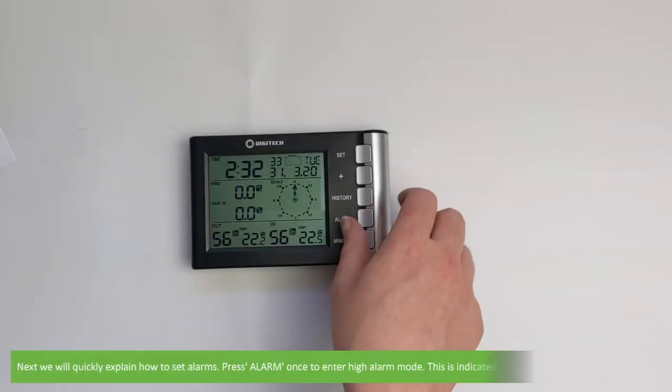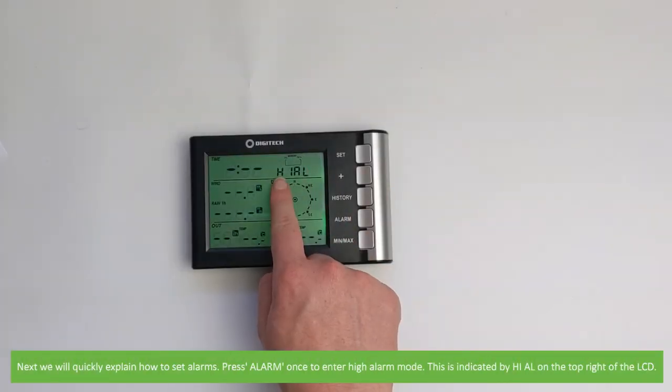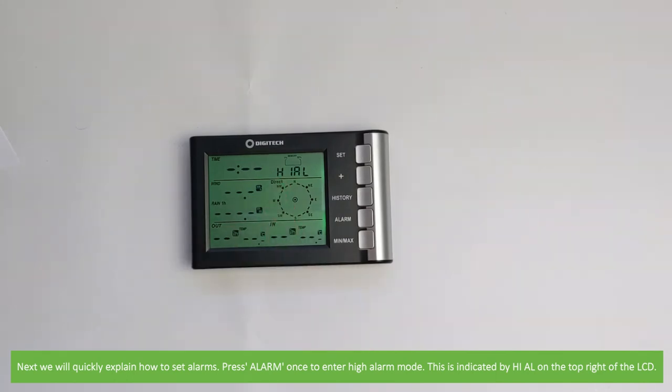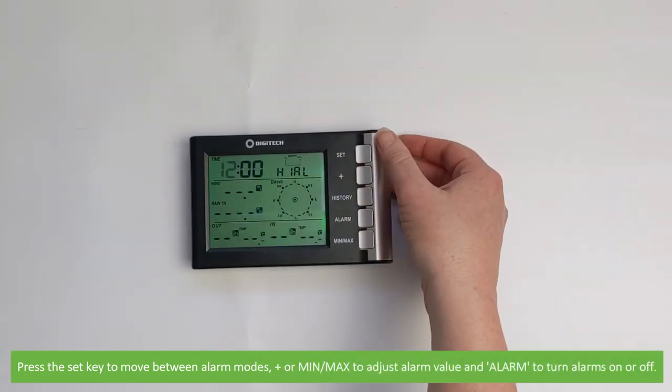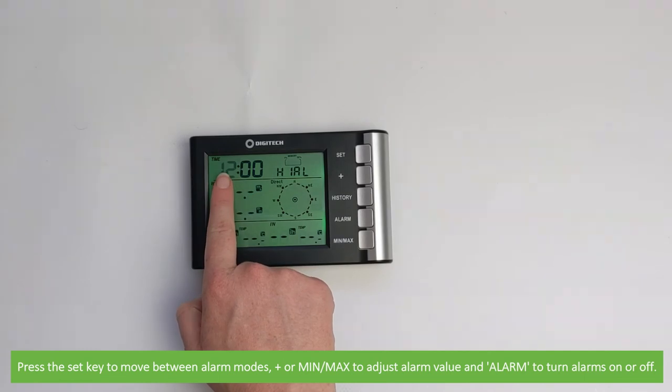Next we will quickly explain how to set alarms. Press alarm once to enter high alarm mode. This is indicated by H-I-A-L on the top right of the LCD. Press the set key to move between alarm modes, plus or min max to adjust alarm value and alarm to turn alarms on or off.